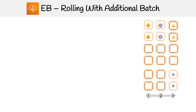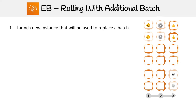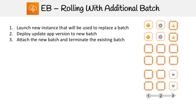Let's take a look at rolling with additional batch. The idea here is that when you start to deploy, you're going to spin up new servers. If you're doing it in batches of two or whatever size, instead of taking a batch out of service, we're just going to add new servers. Then we're going to apply our app version there, and once those are good, we're going to terminate our old instances, or another batch.